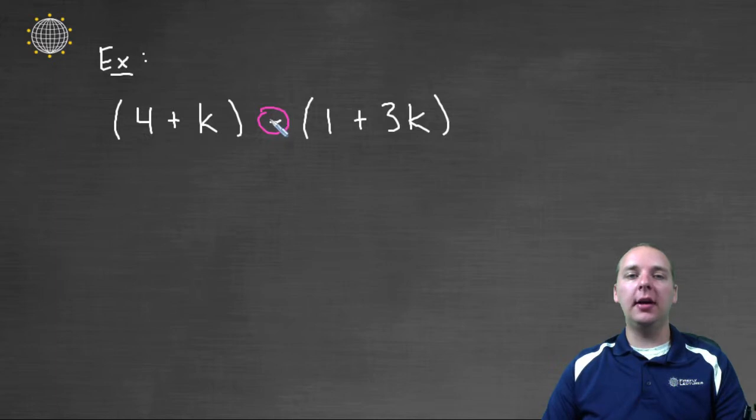you could think of it as plus negative one. You could think of minus as plus negative one times the quantity one plus three k. So the distributive property is applicable here. We would need to distribute this negative throughout the last two terms.